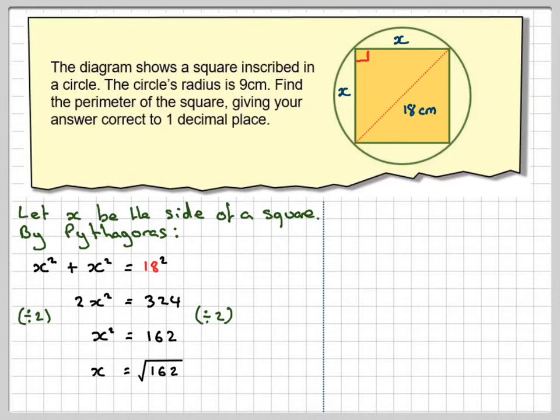We don't actually have to work it out. The question said, what we found there is the length of one side. We have to find the perimeter, which is the distance all the way around the outside of the square.